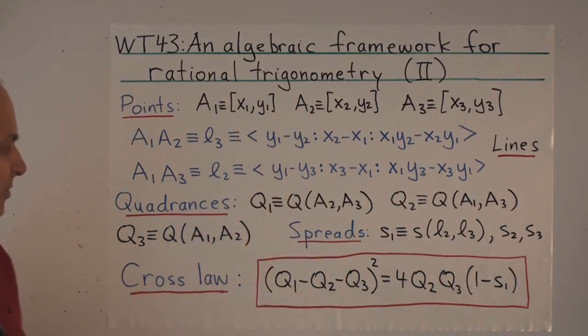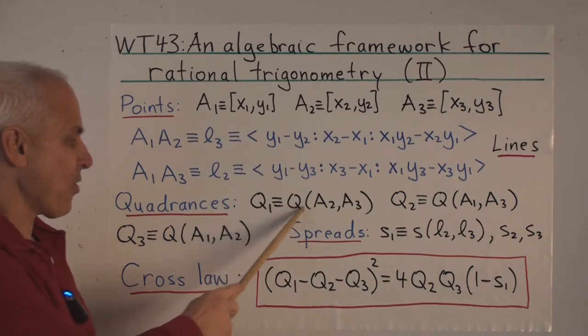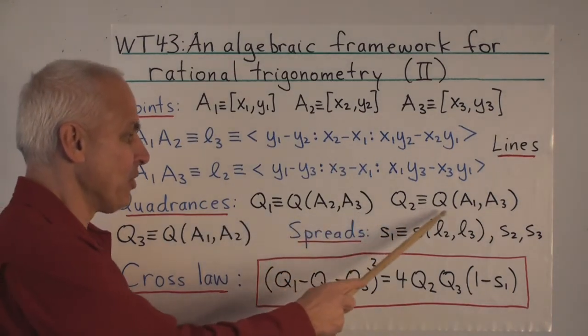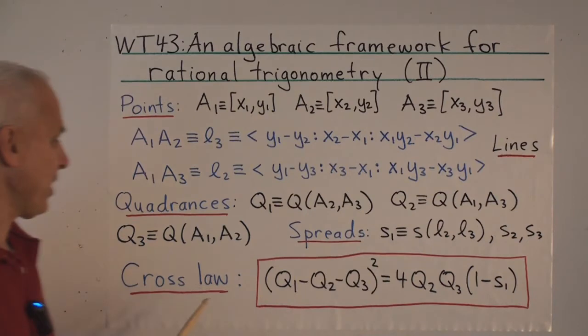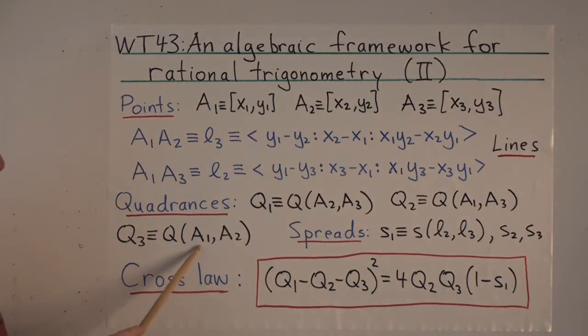Now a bit more notation. We'll denote by Q1 the quadrance between A2 and A3. Q2 is the quadrance between A1 and A3. Q3 is the quadrance between A1 and A2.